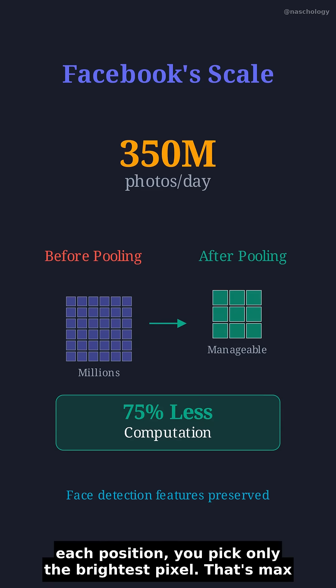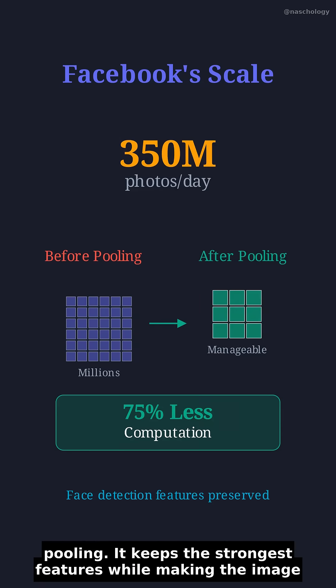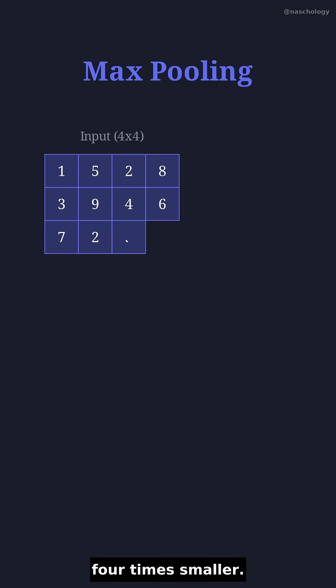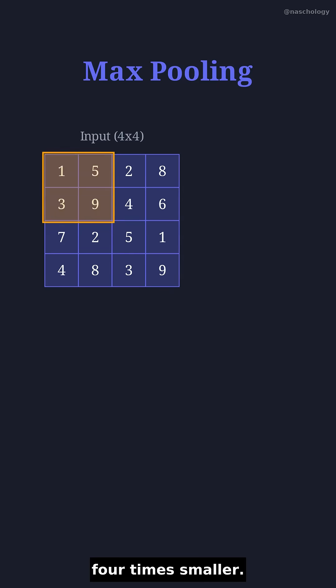Imagine sliding a small window across an image, and at each position you pick only the brightest pixel. That's max pooling. It keeps the strongest features while making the image four times smaller.